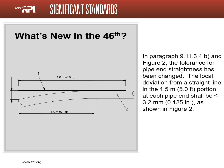Pipe end straightness is not a new concept. However, paragraph 9.11.3.4 and figure 2 define changes to how the measurement is taken, as well as the tolerance. The old tolerance was 0.156 inch over the last 4 feet. The new tolerance is 0.125 inch over the last 5 feet.